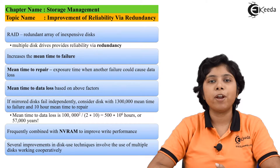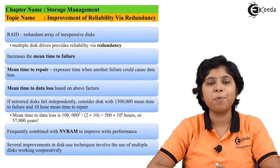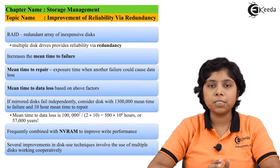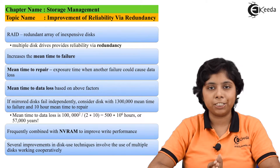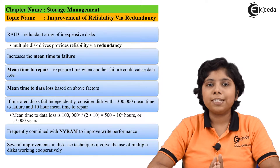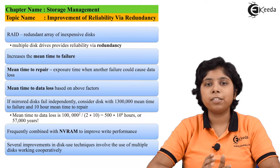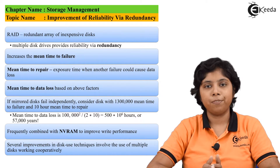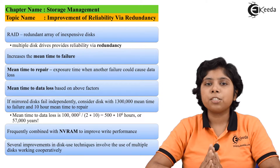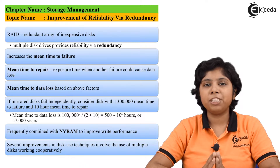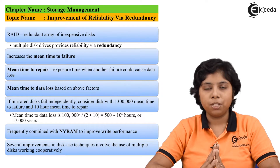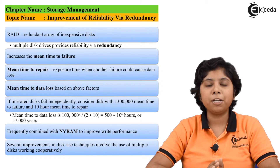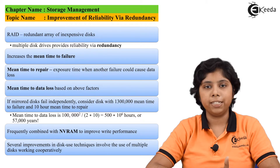Nowadays, RAID is more commonly used for performance and reliability, which is considered the biggest concern within operating system memory criteria. The 'I' in RAID now stands for 'independent' rather than 'inexpensive.' Redundancy within RAID can be achieved by mirroring the disk.